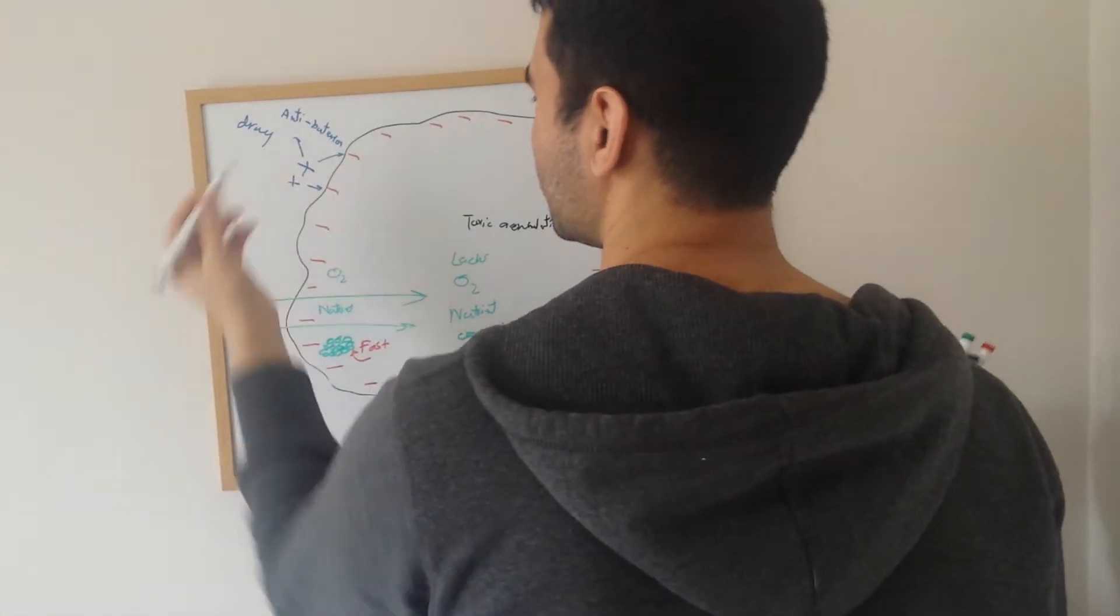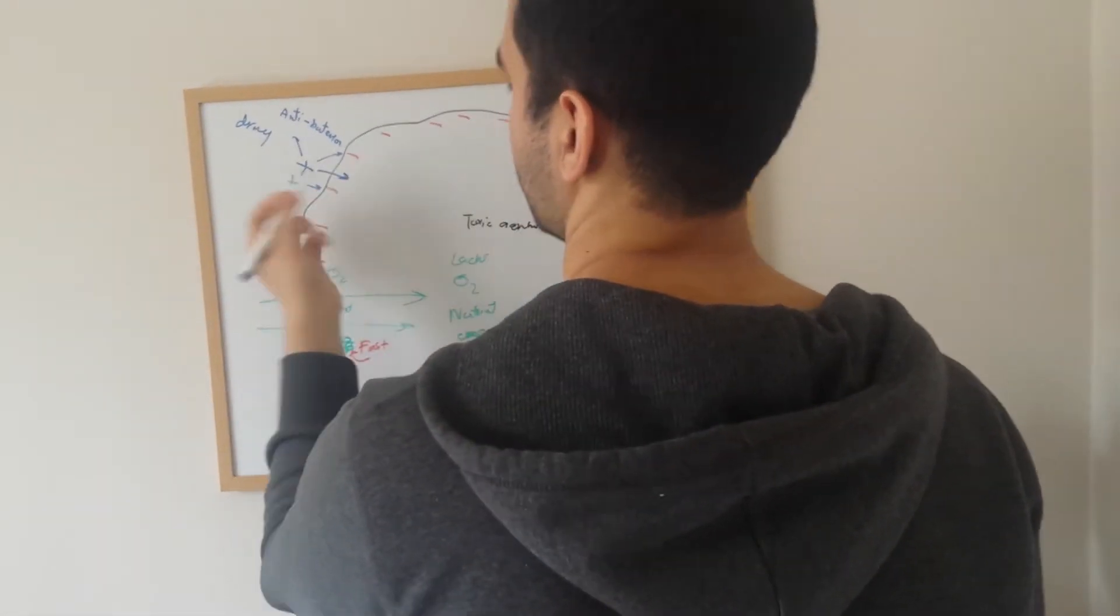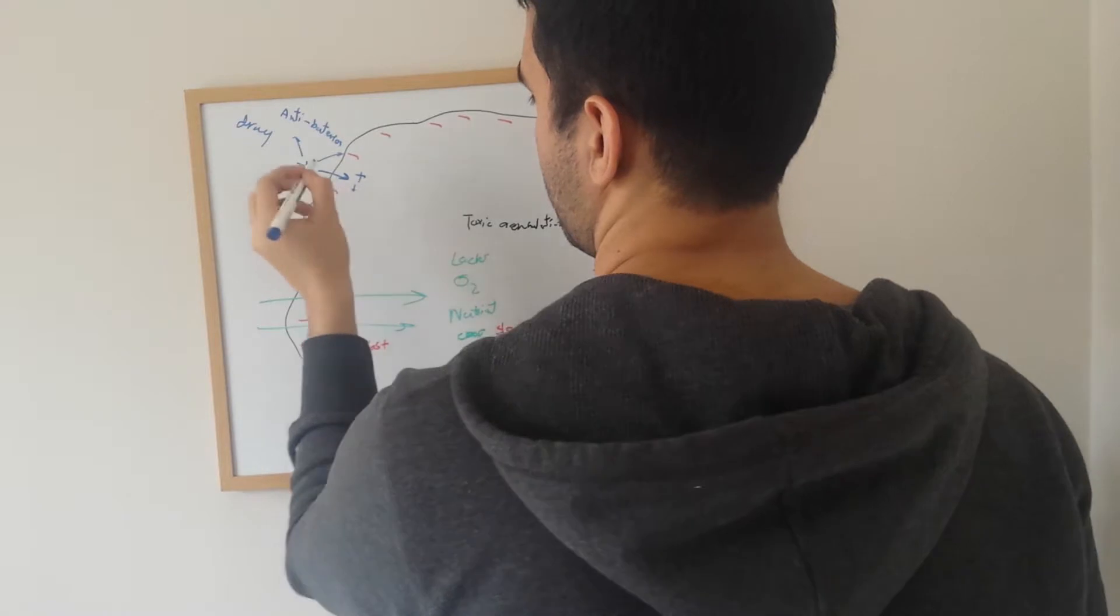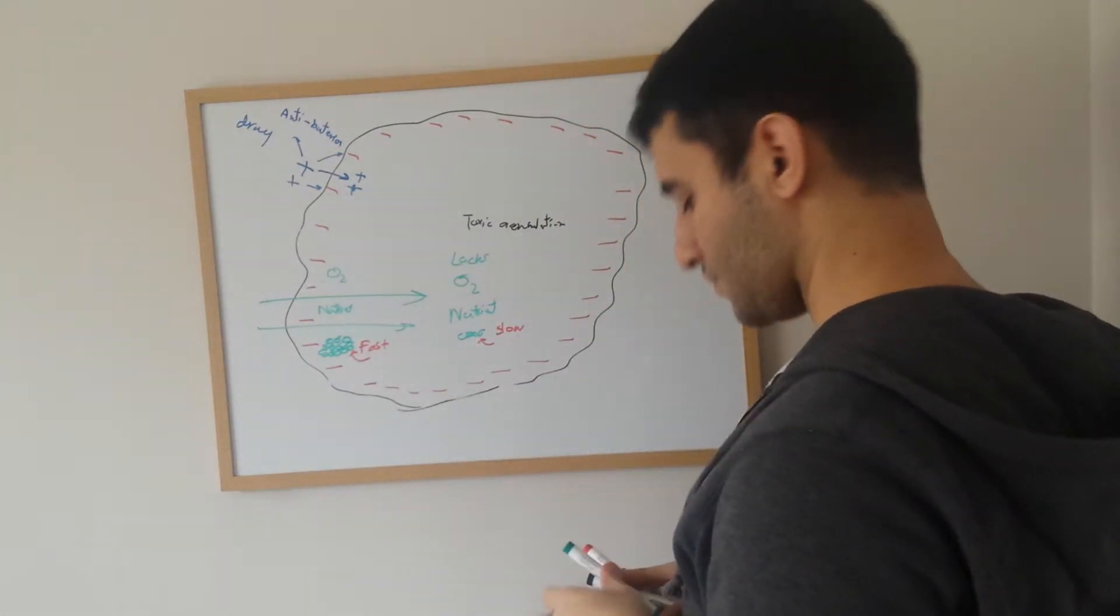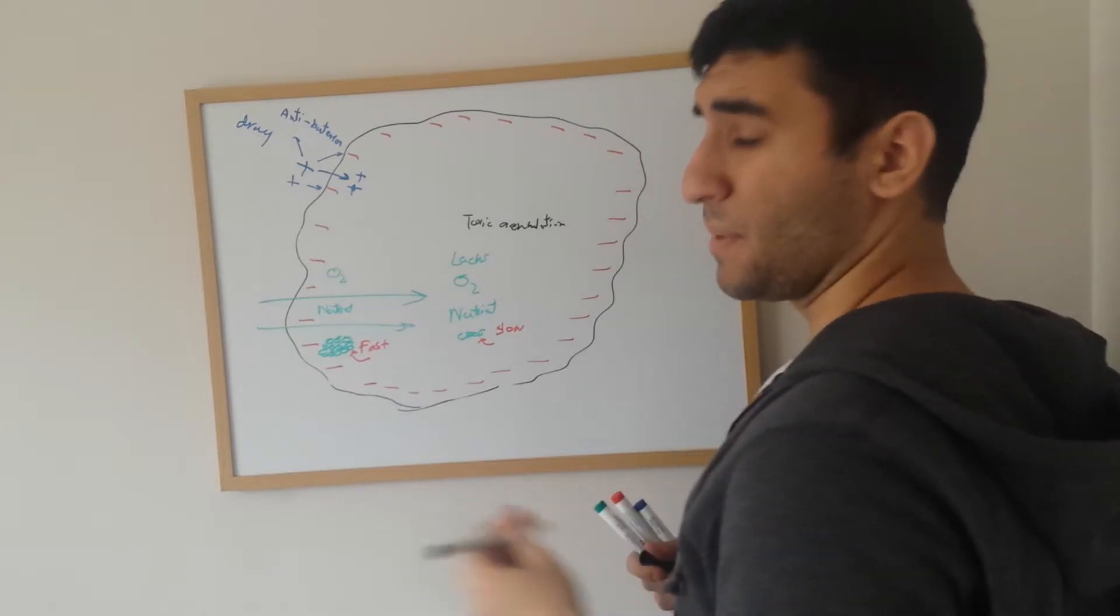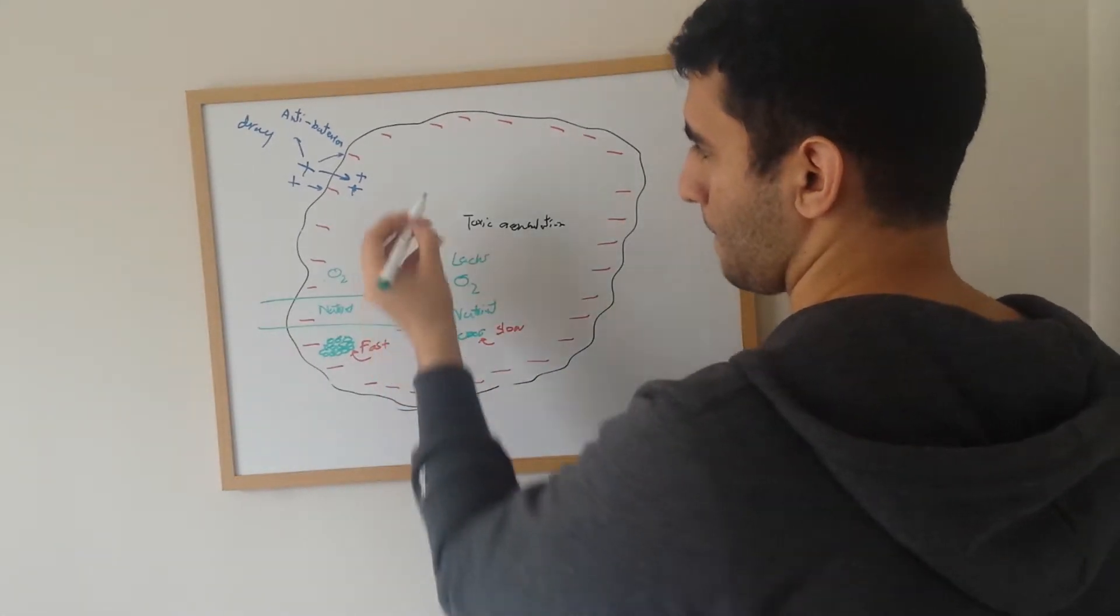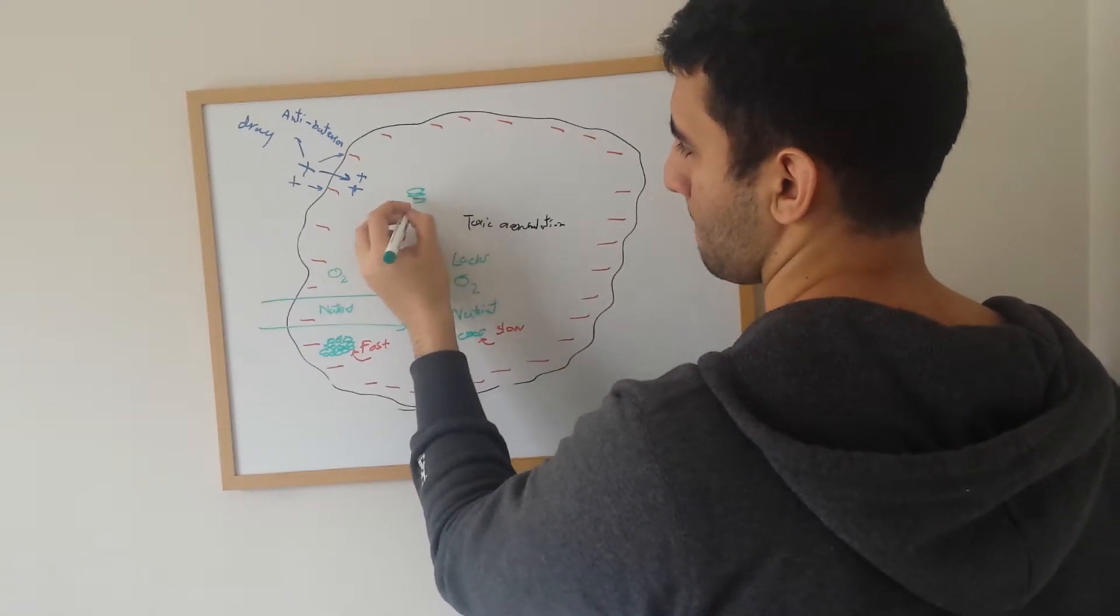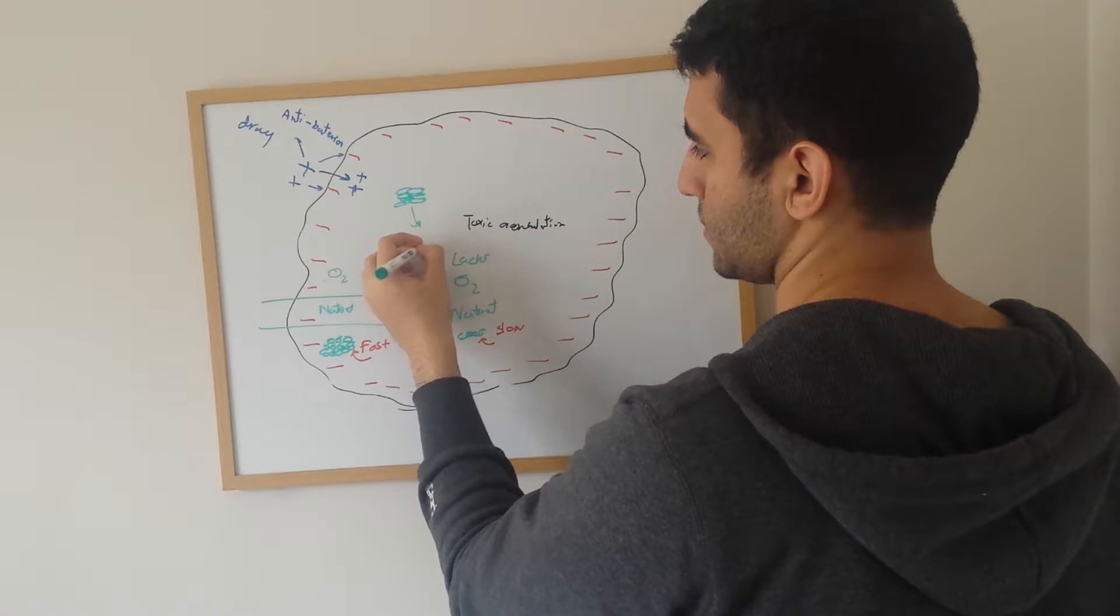But even, for example, say the drug could in turn penetrate inside the biofilm. So we still have some drugs here. There are something known as persister cells. They're really important cells - persister cells.